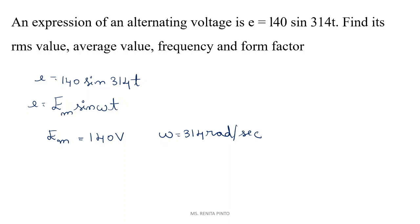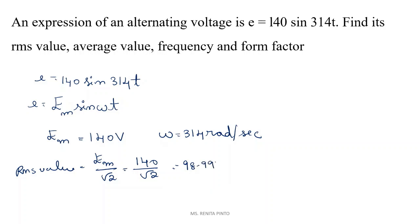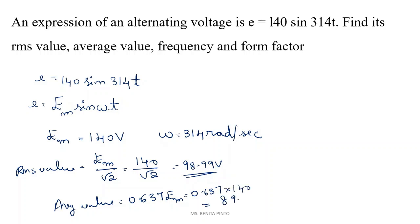First, the RMS value: Erms = Em / √2 = 140 / √2 = 98.99 volts. Next, the average value is 0.637 × Em = 0.637 × 140 = 89.18 volts.